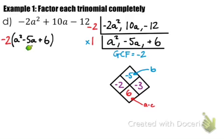So now we're going to replace the negative 5a with a negative 2a minus 3a. So I have a squared minus 2a minus 3a plus 6.